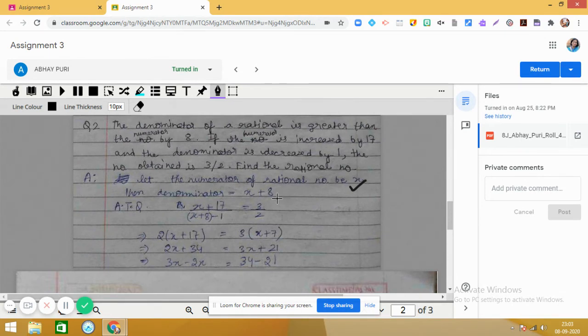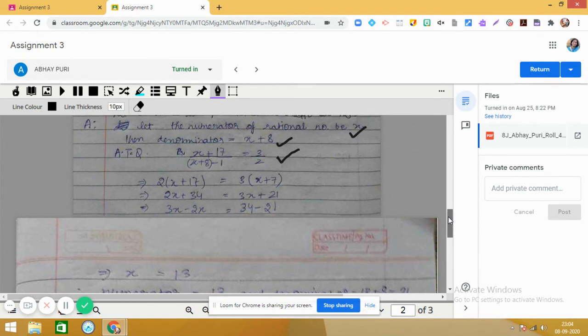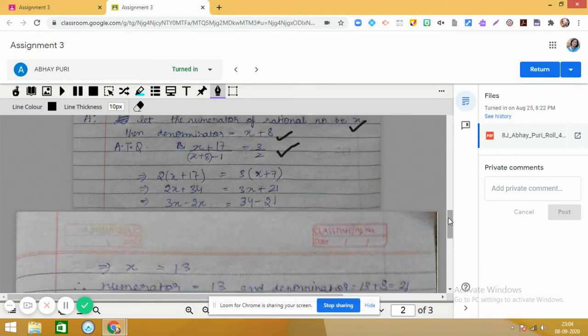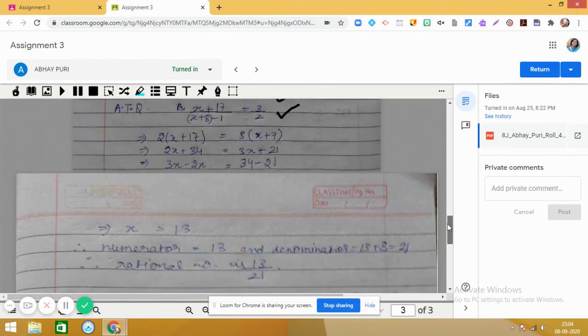So we have to find the rational number here. We assume that numerator of the rational number be x, and the denominator is 8 more than this, so this will be x + 8. It is given that if numerator is increased by 17, so we get x + 17, and denominator is decreased by 1, that means x + 8 - 1. So this equation is framed correctly. Then we do the cross multiplication: 2(x + 17) = 3(x + 7).